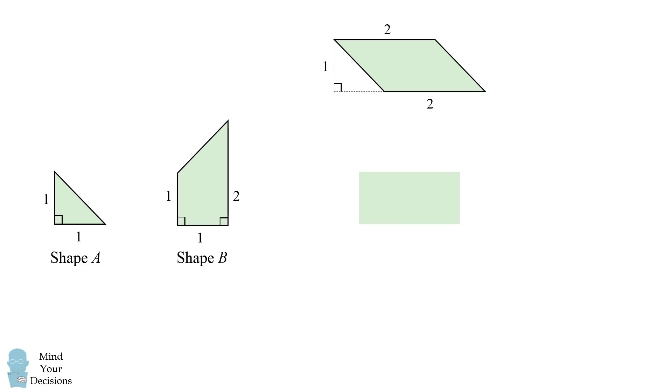The third shape we can form is this parallelogram. We'll illustrate this by starting out with our two shapes. Now let's rotate shape B, then rotate shape A, and then join them together.